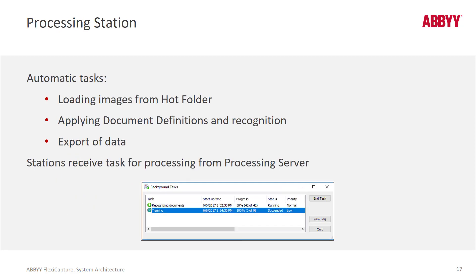The processing station has three main tasks: loading images from hot folders (ingestion), applying document definitions and performing OCR to recognize data on documents, and exporting data. These are CPU-intensive tasks, and processing stations are very typically virtualized with their CPUs consistently pegged.